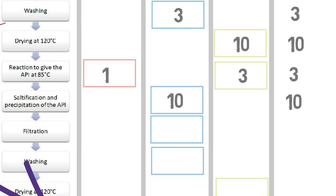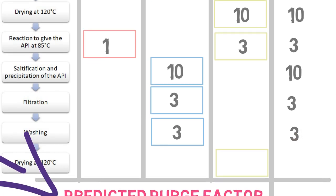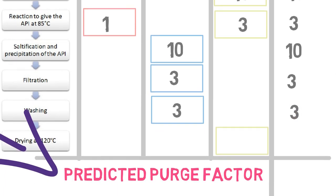For filtration and washing, additional solubility factors of 3 are given. And finally, since the drying temperature is more than 20 degrees higher than the boiling point of the impurity, a volatility factor of 10 is given.